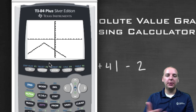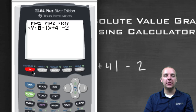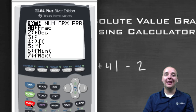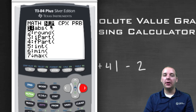So again, it's pretty easy to graph absolute value functions on the calculator. You just have to know where to find the absolute value, which is under the Math button — right arrow to the number column, and ABS right there.